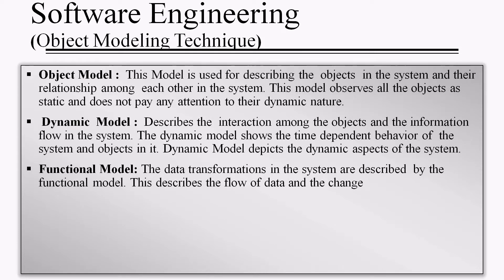These are described by the object model, dynamic model, and functional model of OMT. The object model is used for describing the objects in the system and their relationships among each other. This model observes all the objects as static and does not pay any attention to the dynamic nature.